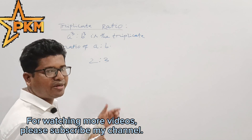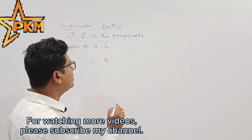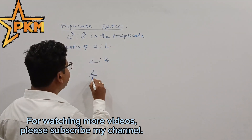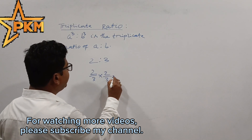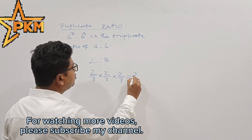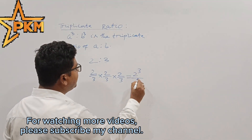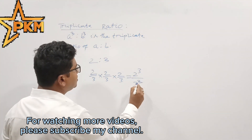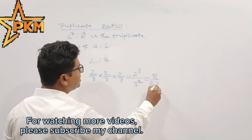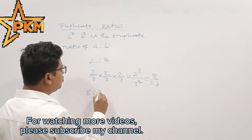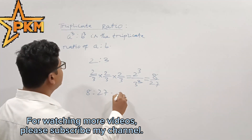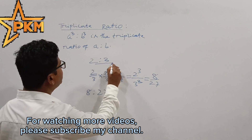The triplicate ratio of 2 is to 3 is: 2/3 × 2/3 × 2/3, which equals 8/27. So 8 is to 27 is the triplicate ratio of 2 is to 3.